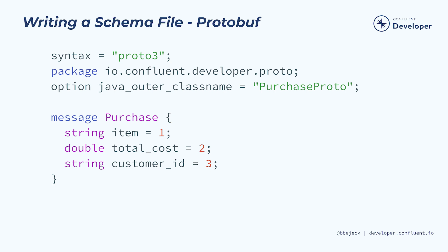Here's a schema outlining a purchase type along with all of the fields that we'd need to describe a purchase. The first line declares the version of protocol buffers to use. Throughout the course, we're going to use version 3. The package declaration creates a namespace for protofiles to prevent name clashes. By default, it'll be the package name of the generated Java class, unless you specify option java_package in the protofile.